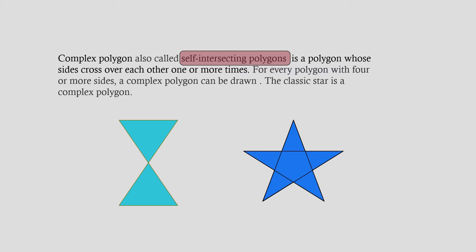For every polygon with four or more sides, a complex polygon can be drawn. The classical star is a complex polygon.